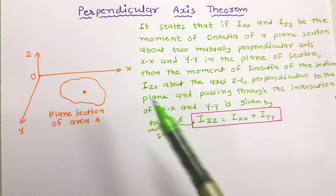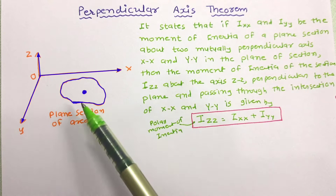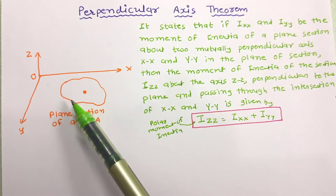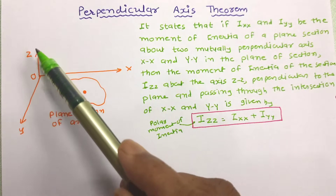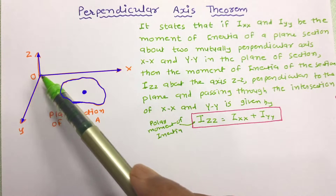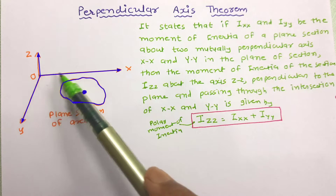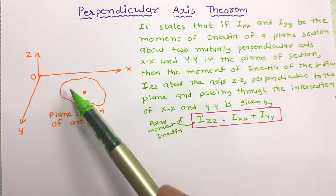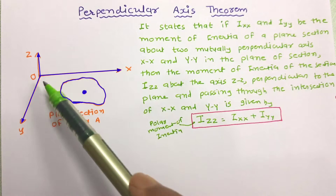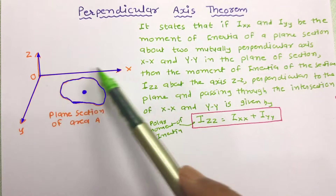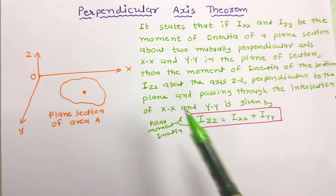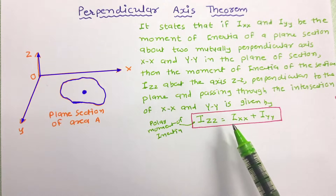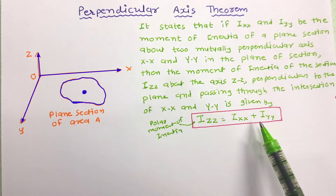The moment of inertia IZZ of this section is equal to the moment of inertia about the axis which is perpendicular to the plane of the lamina — meaning it is perpendicular to XX, YY, and the lamina — and it passes through the intersection of the XX and YY axes. So IZZ = IXX + IYY.